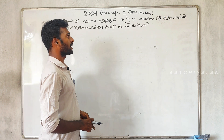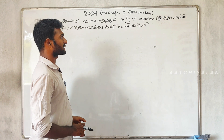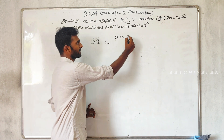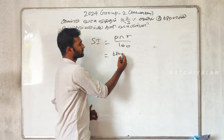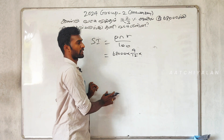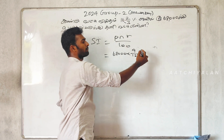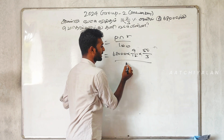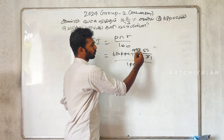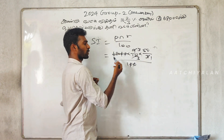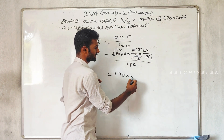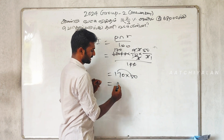Simple interest: SI is equal to PNR by 100. Principal is 60, number of years is 90 — so 9 by 12. Rate of interest is 16.23. So 3 times 16 is 48; 48 plus 2 gives 50, then 53 by 100.